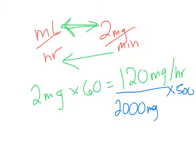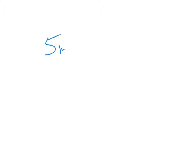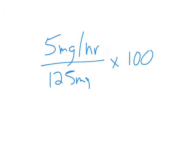On number four, it's just a straightforward dosage calculation. What's been ordered is five milligrams per hour, and I want it in milliliters per hour. I've already got it in hours, so I just need to go based on the dosage: 125 milligrams per quantity of 100. That's what I end up doing on this one.